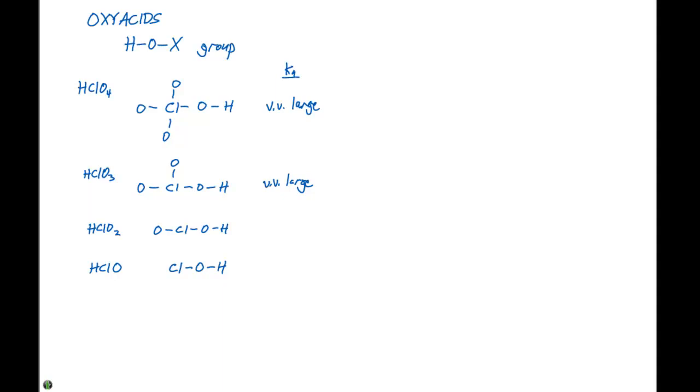For HClO2, we have 1.1 times 10 to the minus 2 for the Ka. And for HClO, we have 3.0 times 10 to the minus 8 for the Ka.